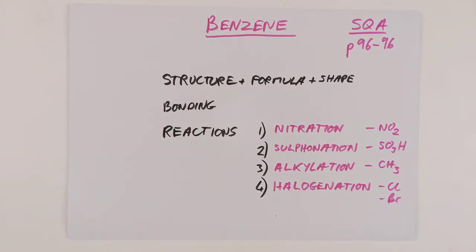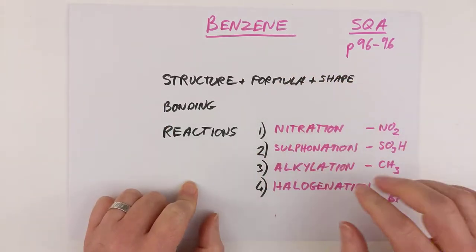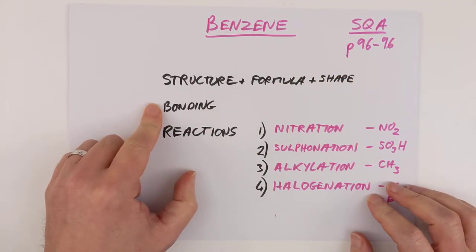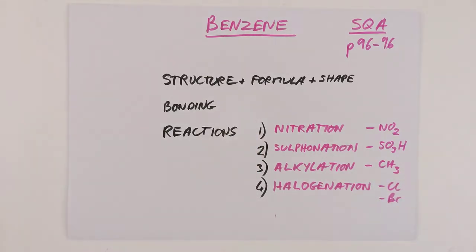These are the three things I would like us to have a look at tonight. The structure of a benzene molecule, its formula and its shape, the actual bonding that's involved in it. And you need to know four reactions according to the SQA. The good news is, you don't need to know the mechanism of those reactions, so no curly arrows. You just need to know the reactants and what you make.